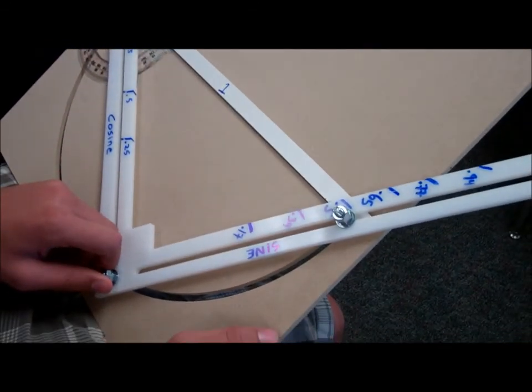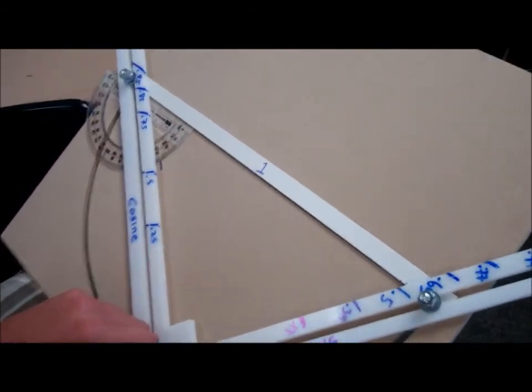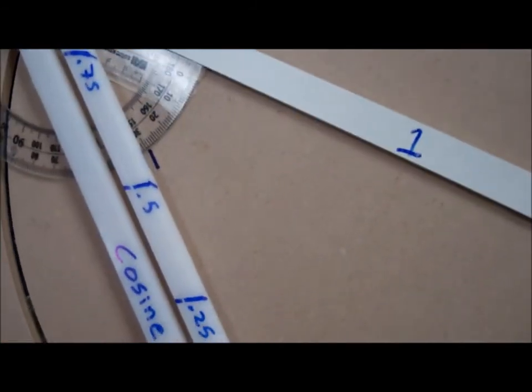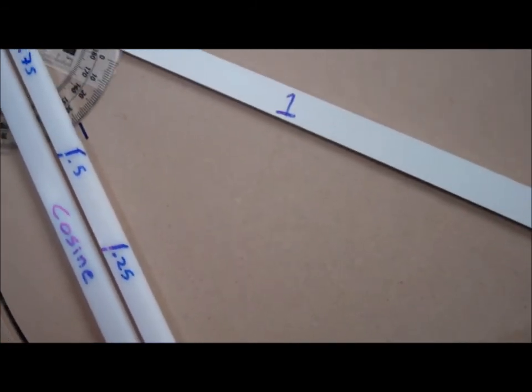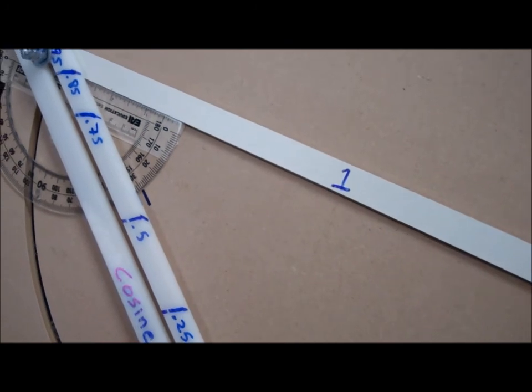Oh, cool. What's the cosine of 32 degrees? About 0.83. Yep.